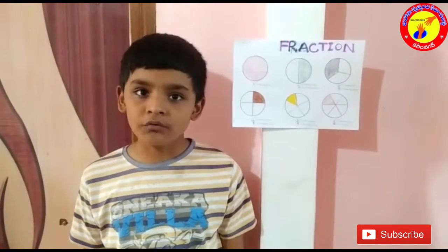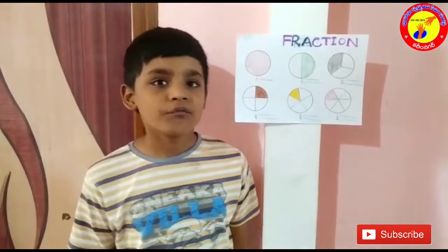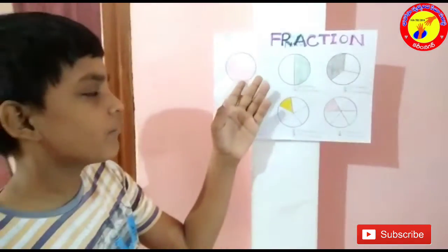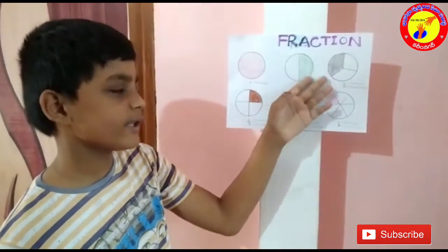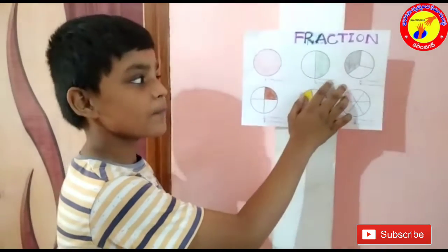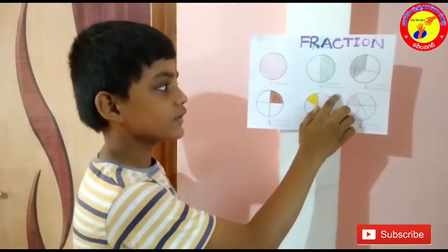Fraction is a part of a whole. Let's take examples. If a whole part is divided into 2 equal parts, it is 1 by 2. 1 is the numerator and 2 is the denominator.